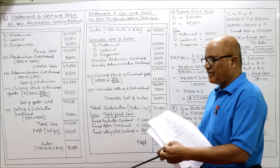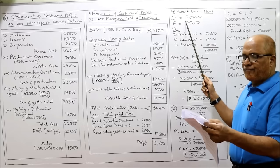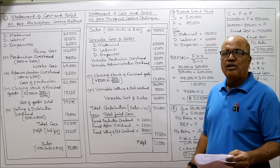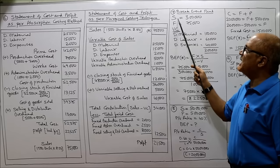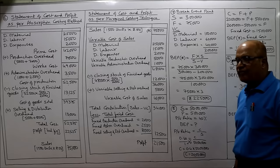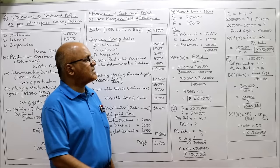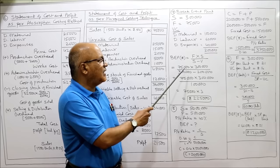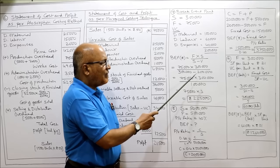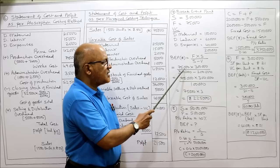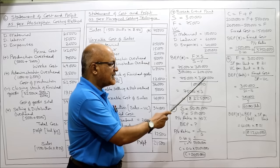Problem number 7: compute break-even point from the following figures. Sales = 3 lakh; fixed expenses = 75,000; direct material + direct labour + direct expenses = 2 lakh (variable cost). BEP formula = F × S / (S − V) = 75,000 × 3,00,000 / (3,00,000 − 2,00,000) = 75,000 × 3,00,000 / 1,00,000 = 75,000 × 3 = 2,25,000 rupees. Break-even point is rupees 2,25,000.